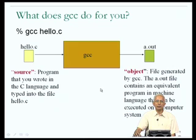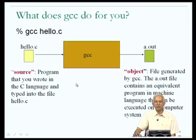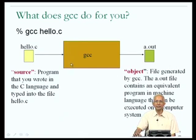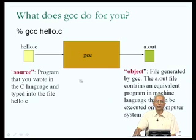a.out is the file generated by GCC and it contains an equivalent program to the one that you wrote in C, but in the machine language, so that it can be executed on a computer. This is essentially how a program translator works: it takes in a source program in a higher-level language such as C and translates it into an equivalent program in a lower-level language such as the machine language.